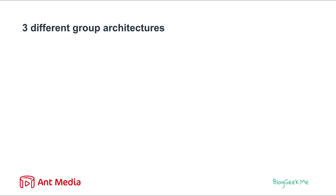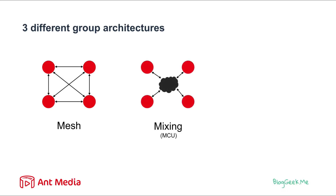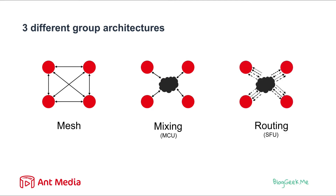For that, there are three different types of group architectures we can use, especially in live streaming where we have multiple participants. The first one is Mesh, where multiple users talk to each other directly. Then there is mixing using an MCU — multi-point conferencing unit — where all participants join a server and get data in a mixed format. The third is routing using a Selective Forwarding Unit, an SFU, where all participants send their data to media servers in the cloud and receive routed media from all other participants.